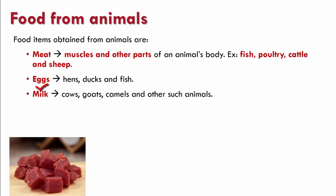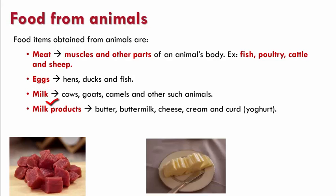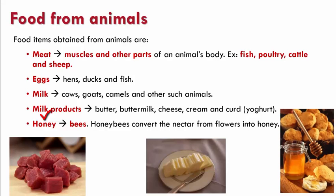Milk and its produce are obtained from cows, goats, camels and other such animals. Some milk products are butter, buttermilk, cheese, cream and curd, which is also known as yogurt. Honey is produced by bees, who convert the nectar they collect from flowers into honey and store it in their hives.